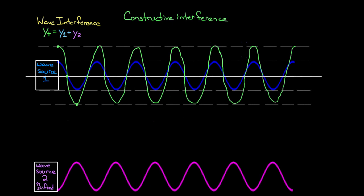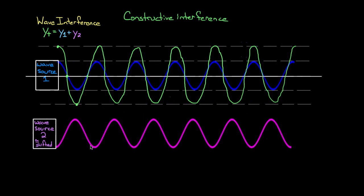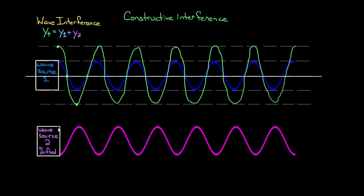But check this out. Let's say you had a different wave source two. This one is what we call pi-shifted, because instead of starting at a maximum, this one starts at a minimum compared to what wave source one is at. So it's one half of a cycle ahead of, or behind, wave source one. Half of a cycle is pi, because a whole cycle is two pi. That's why people often call this pi-shifted, or 180 degrees shifted. Either way, it's out of phase from wave source one by half of a cycle.